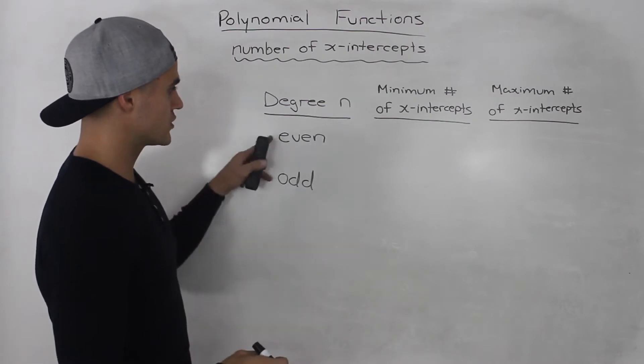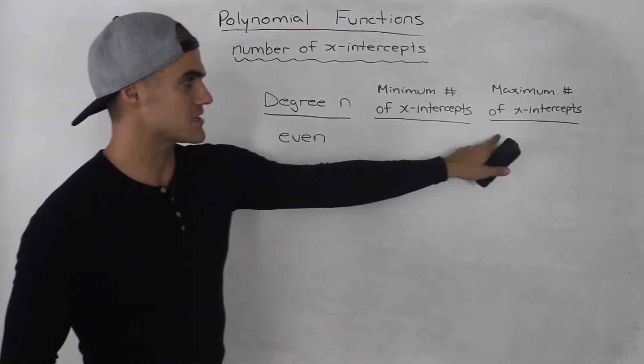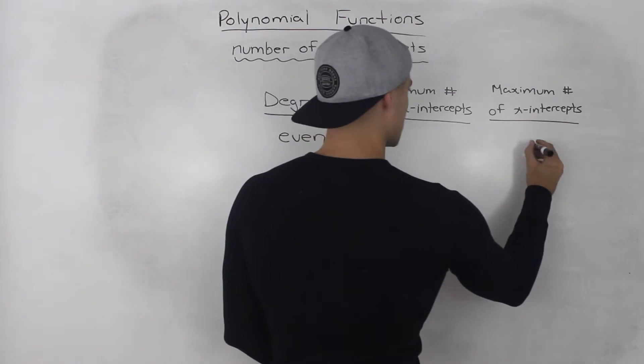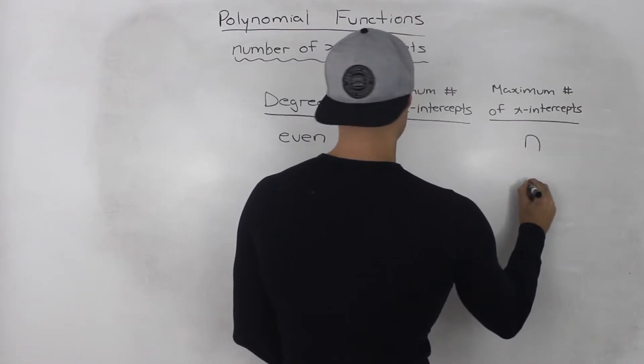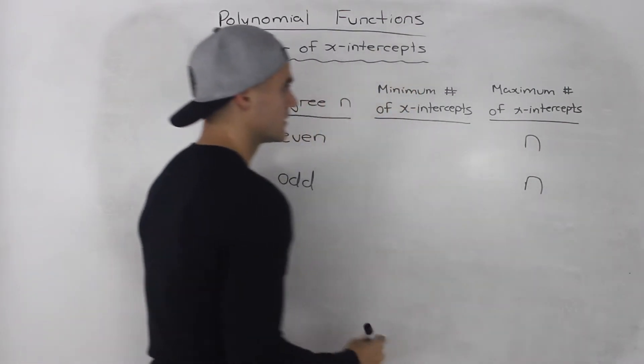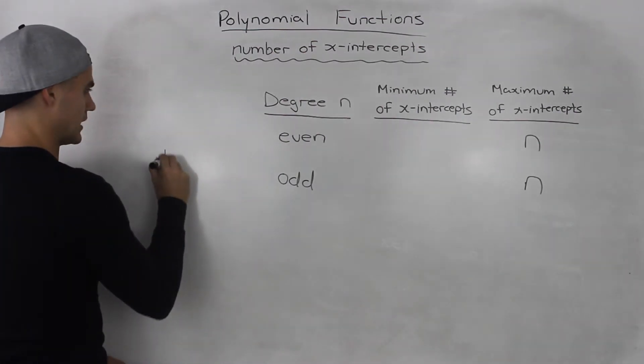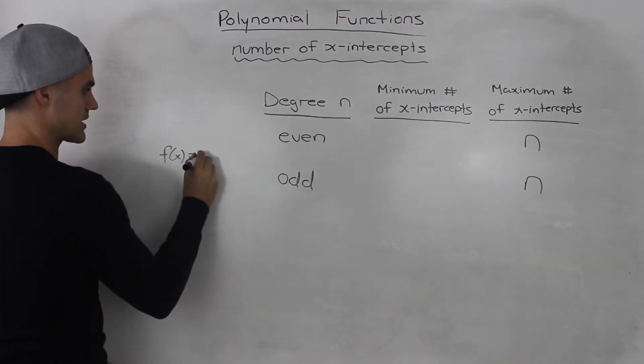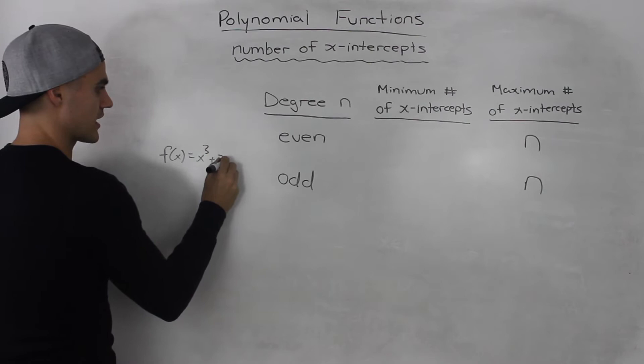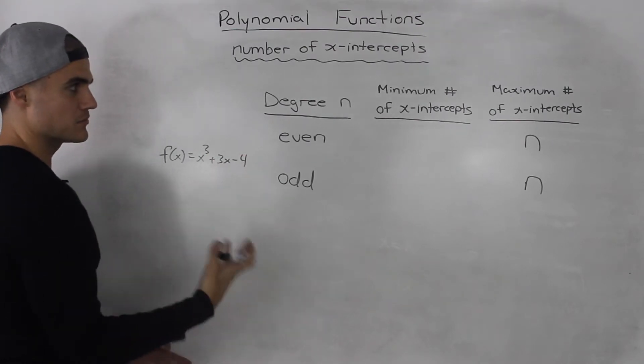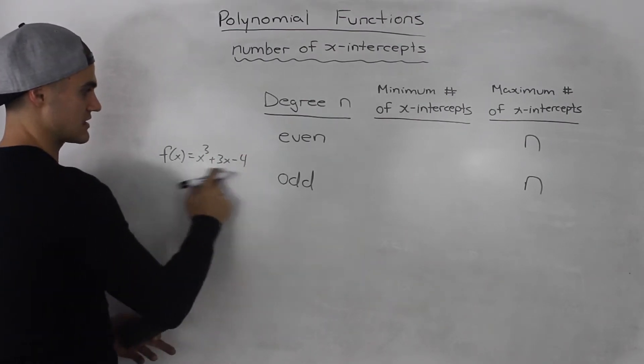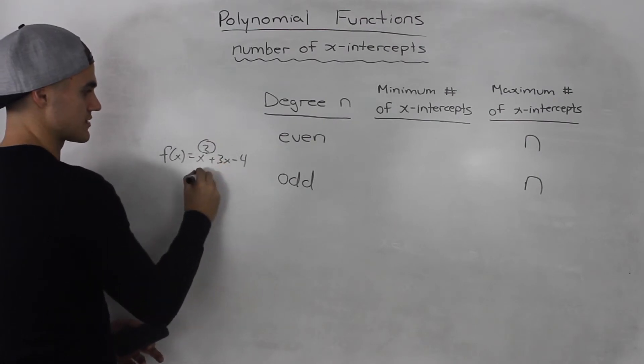Whether the degree is even or odd, the maximum number of x-intercepts is always equal to the degree, n. For example, a function like x cubed plus 3x minus 4, the maximum number of x-intercepts this function can have is 3, its degree.